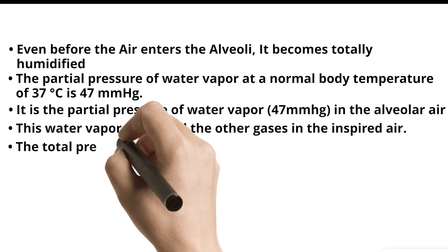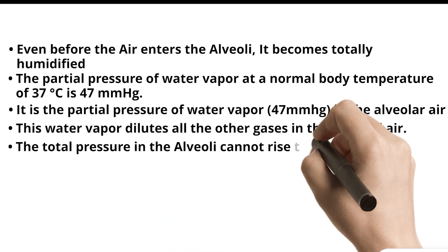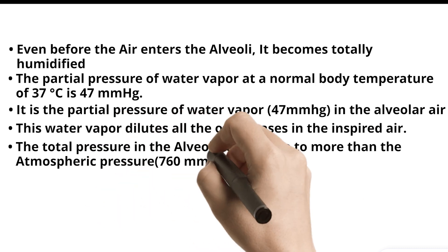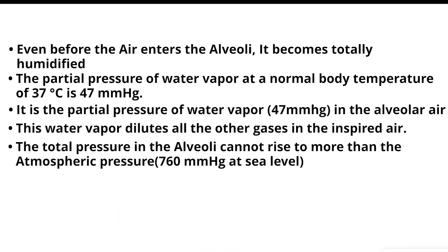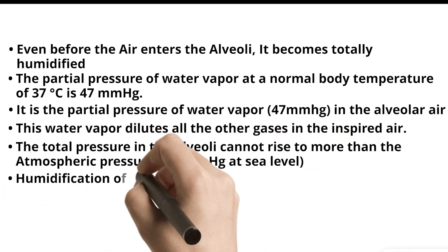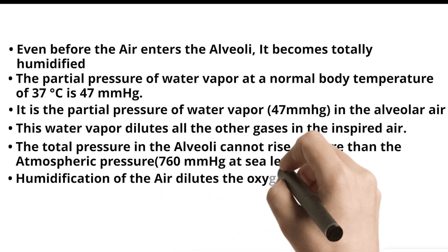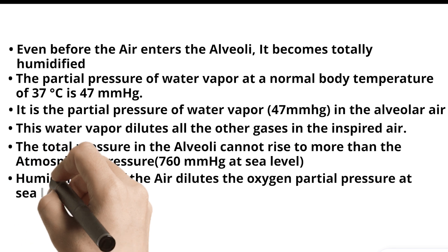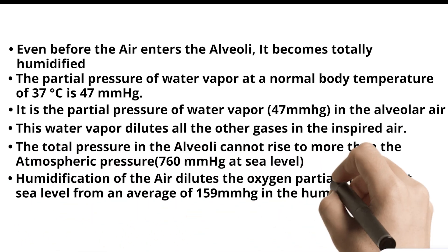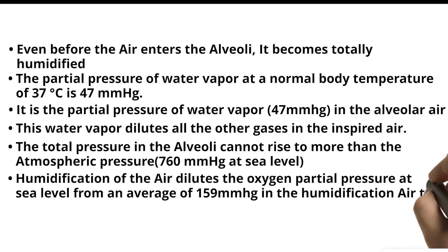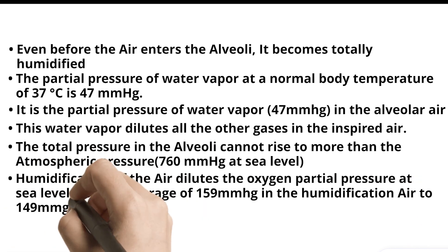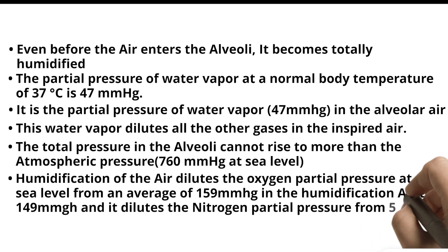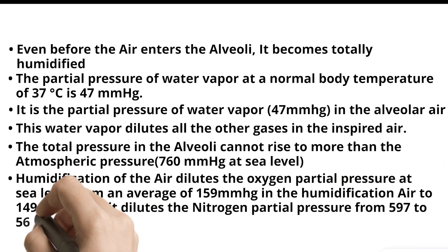The total pressure in the alveoli cannot rise to more than the atmospheric pressure at sea level. Humidification of the air dilutes the oxygen partial pressure at sea level from an average of 159 millimeter mercury to 149 millimeter mercury, and it dilutes the nitrogen partial pressure from 597 to 563 millimeter mercury.